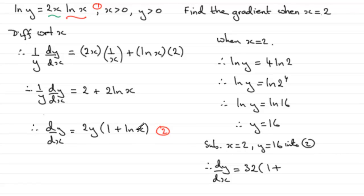the natural log of 2 when x is 2. And there you go, dy by dx then, the gradient of the curve at the point where x equals 2.